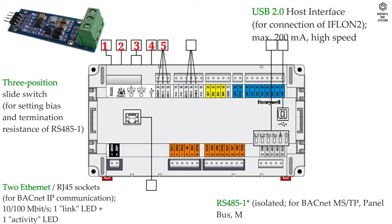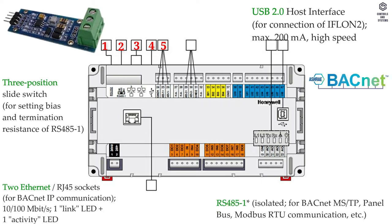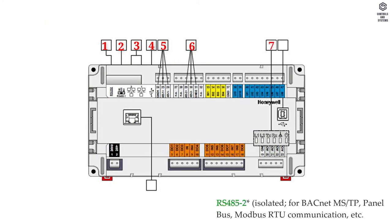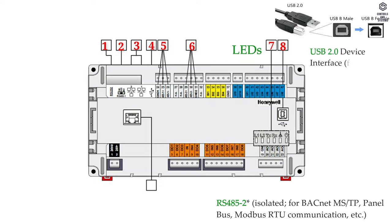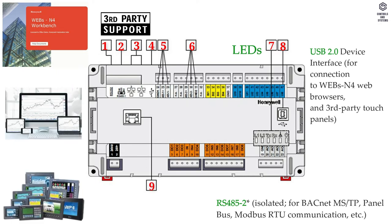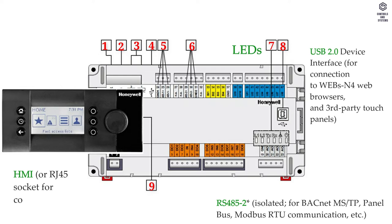5. RS-485-1, isolated for BACnet MSTP, panel bus, Modbus RTU communication, etc. 6. RS-485-2. 7. LEDs. 8. USB 2.0 device interface for connection to WEBs and for web browsers and third-party touch panels. 9. HMI RJ-45 socket for connection of portable HMI.